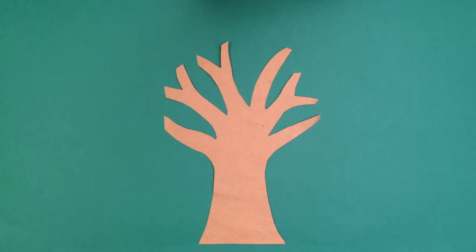To start, you can cut out a simple tree from brown paper. Then, you can have the child cut out different colored leaves for each season to decorate the tree.